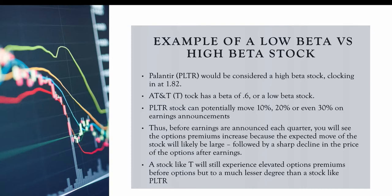Palantir is considered a high beta stock with a beta of 1.82. AT&T has a beta of 0.6 — a low beta stock. Looking at the charts, Palantir had a high around $45 in 2020 when it went public and is now at $6 a share. AT&T has had its ups and downs — down to $17 after spinning off Warner Brothers Media — but the overall picture for AT&T is a lot less volatile. Palantir can move 10%, 20%, 30% on earnings, making it a stock with a lot of implied volatility.